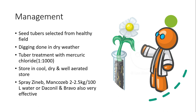For management, seed tubers should be selected from healthy fields. Infected tubers must be avoided. Digging should be done in the dry season to reduce humidity. Treatment of tuber seeds with mercuric chloride is recommended. Seeds should be stored in a cool, dry, and well-aerated store. Once the disease appears in the field, it becomes very difficult to control.